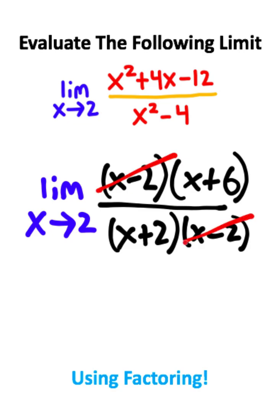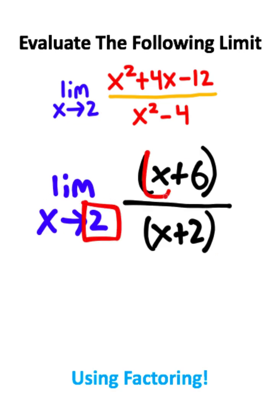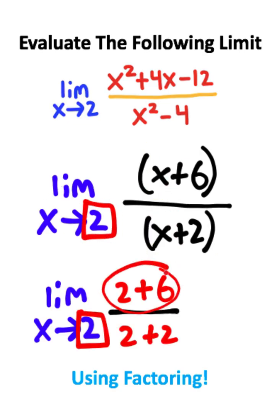I can cancel the x minus 2's. And now I can take our limit and plug it in for where I see x. 2 plus 6 is 8, 2 plus 2 is 4, 8 divided by 4 is 2. So 2 is the answer to the limit.